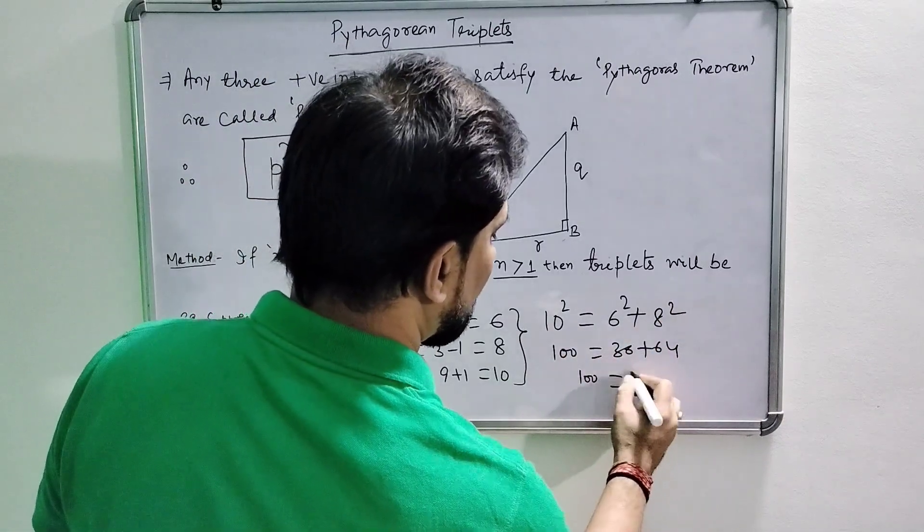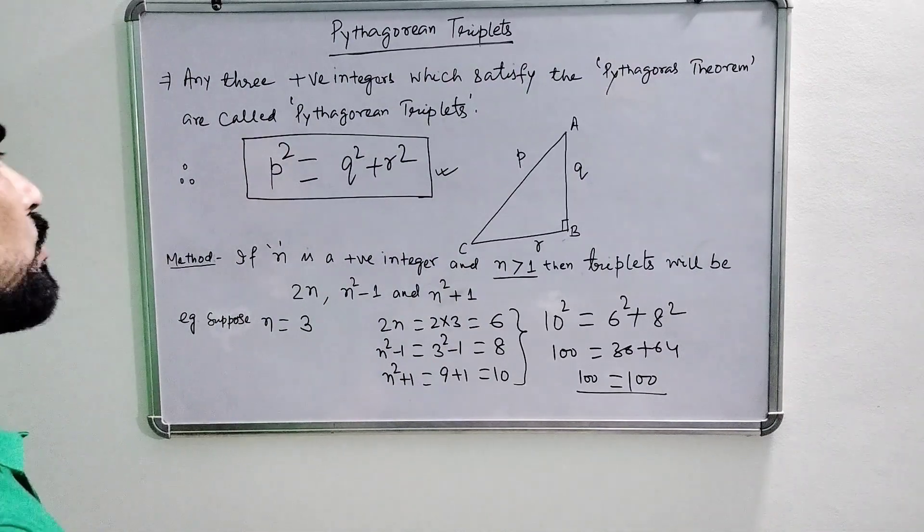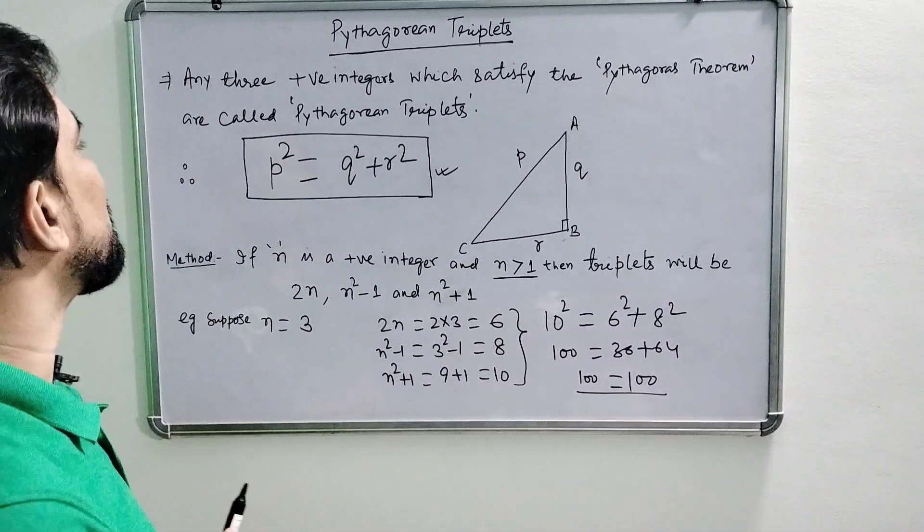So you can see LHS equals RHS, which verifies the criteria. In this way, we can find many Pythagorean triplets.